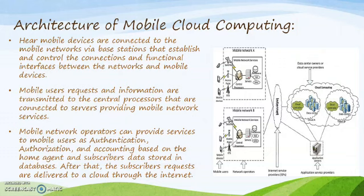Mobile users' requests and information like ID and location are transmitted to the central processors that are connected to servers providing mobile network services. Mobile Network Operators can provide services to mobile users such as authentication, authorization, and accounting based on the home agent and subscriber data stored in the database.